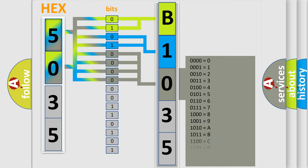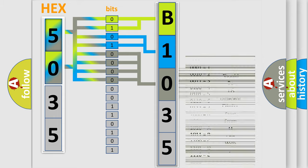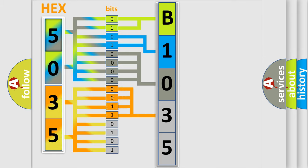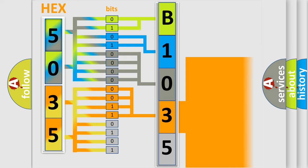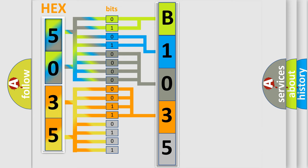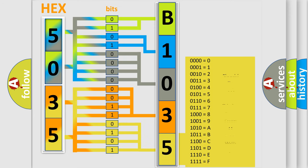The last bits of the first byte define the third character of the code. The second byte is composed of a combination of eight bits. The first four bits determine the fourth character of the code, and the combination of the last four bits defines the fifth character. A single byte conceals 256 possible combinations.